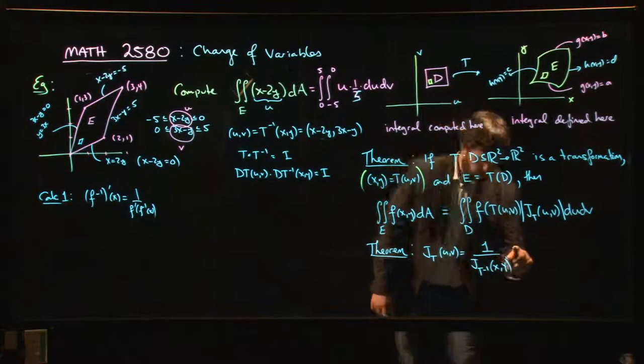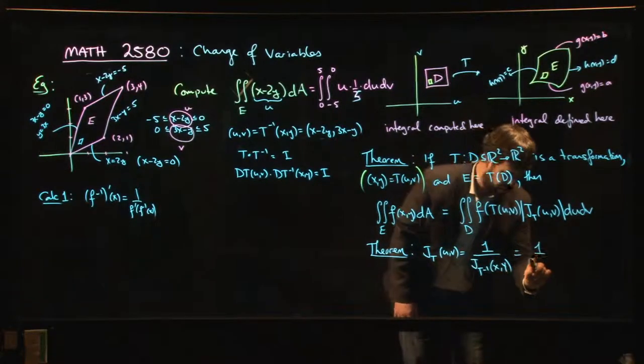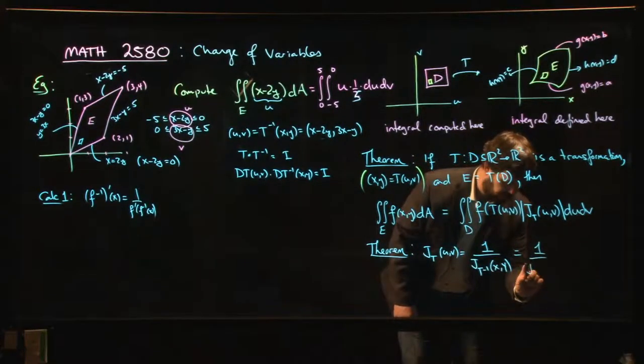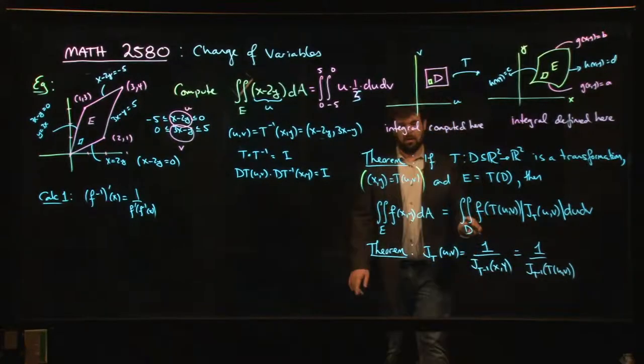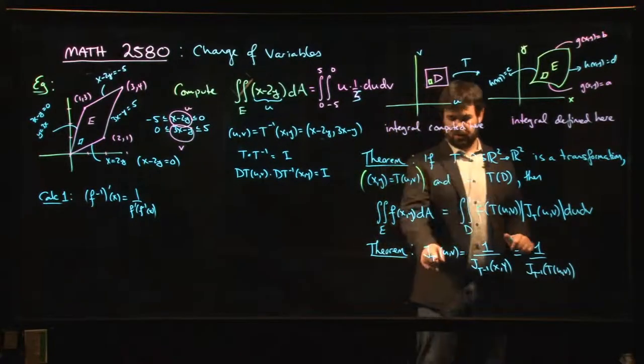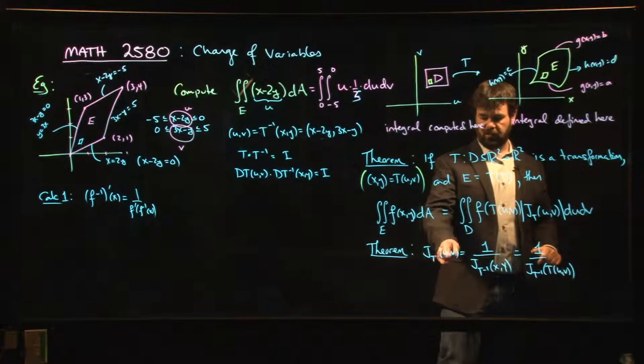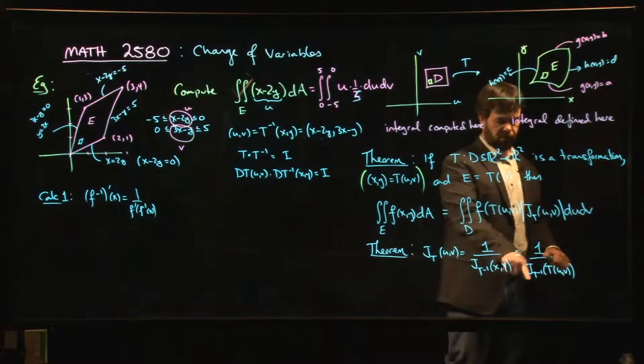Because these are determinants - the determinant of the inverse is 1 over the original determinant. And if necessary we might say, well you know, remember that x and y here are really T of (u,v). So we can do it like that. And you can just as well put T inverse here. Jacobian of T inverse as a function of x and y would be 1 over Jacobian of T.